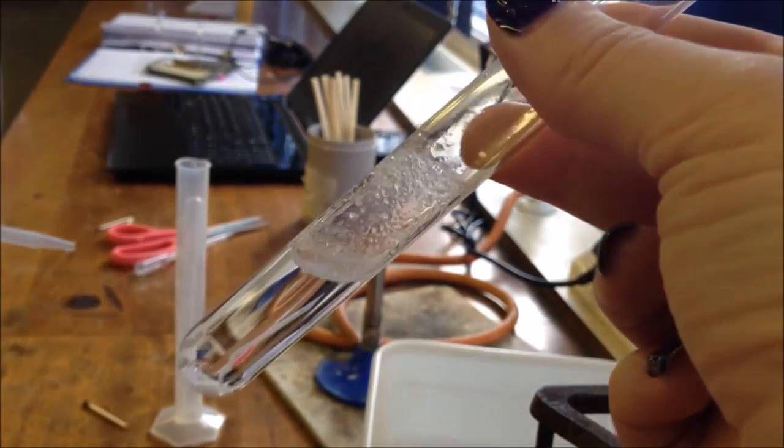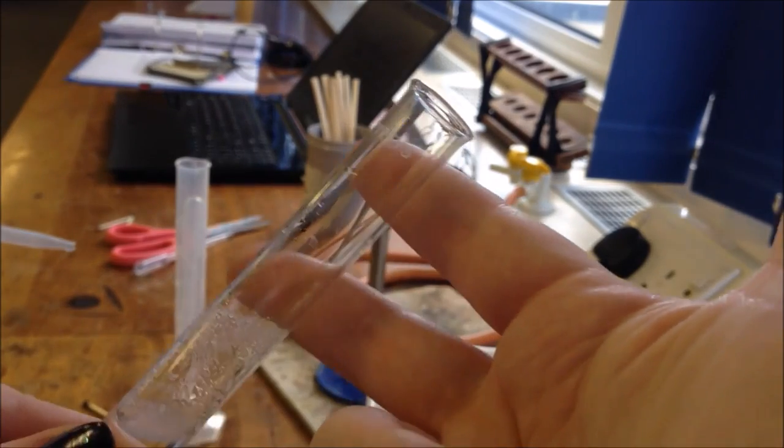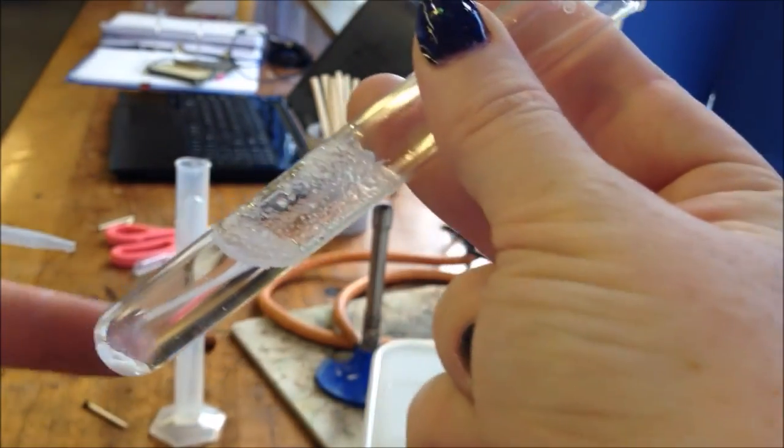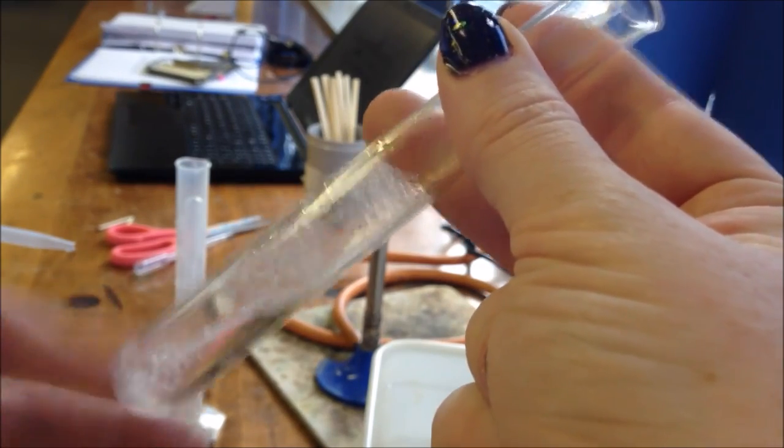Sometimes in the lab you're going to want to mix things together. The best and safest way to do this is to take two fingers and put them here and then your thumb in the middle here so you have a secure grip on the end of the test tube.